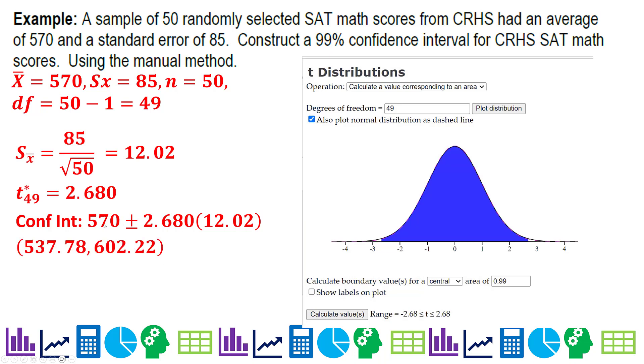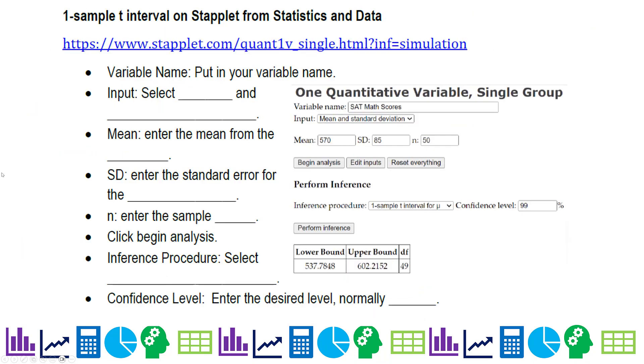So our confidence interval is 570 plus or minus your critical value times your standard error for your sampling distribution. So we can basically go 570. If we multiply this out and subtract it from 570, I think we're going to get about 32.22. And then you subtract that, you get this, you add it, you get that, and there's your confidence interval. But there's an easier method.